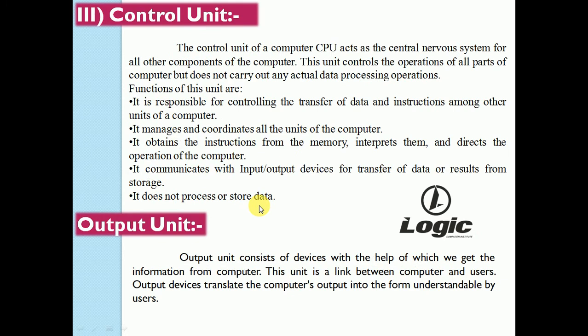The third component is the control unit. The control unit of the CPU acts as the central nervous system for all other components of the computer. It controls the operation of all parts of the computer but does not carry out any actual data processing operations. Its functions include controlling the transfer of data and instructions among the other units, and managing and coordinating all units of the computer.